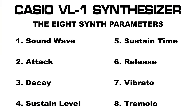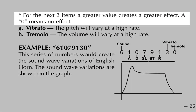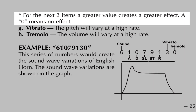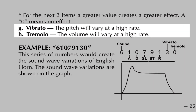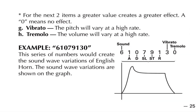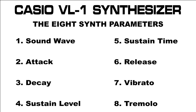The last two parameters, 7 and 8, set the amount of vibrato and tremolo used in the sound. Page 25 of the user guide informs us that a value of zero equals no effect and that increasing the value causes a greater amount of the effect to be applied. Unfortunately there is no parameter to specifically affect the speed or depth of the LFO used for vibrato and tremolo. We can only program the combined amount of the effect that is applied. Those are the eight synthesizer parameters used to generate a custom tone in a VL-1.